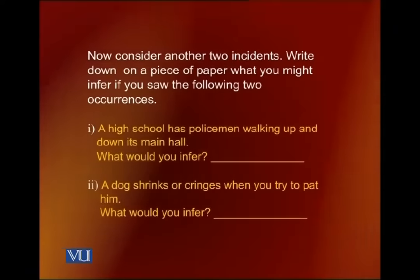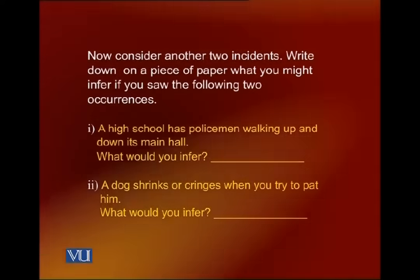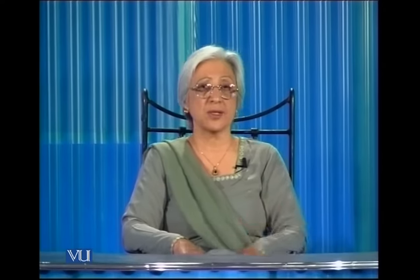In the second incident, there is a dog sitting in a room and you go up to the dog and try to pat it. As you try to pat the dog, it shrinks or cringes. What would you infer? In the second situation of the dog, you would infer that the dog has previously been maltreated and is afraid of people — which is a correct inference. In the first situation, there is a public examination going on, or an important function is taking place and some high-ranking person is present.